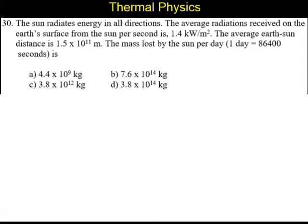Question number 30. The sun radiates energy in all directions. The average radiation received on the earth's surface from the sun per second is 1.4 kilowatt per meter square. The average earth-sun distance is 1.5 into 10 power 11 meters. Find the mass lost by the sun per day, where one day equals 86,400 seconds. Alternatives are: 4.4 into 10 power 9 kg, 7.6 into 10 power 14 kg, 3.8 into 10 power 12 kg, 3.8 into 10 power 14 kg.